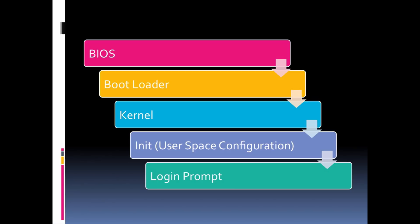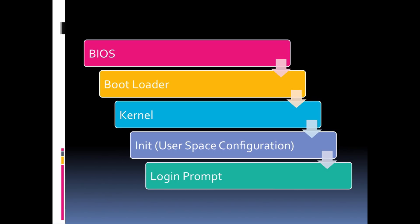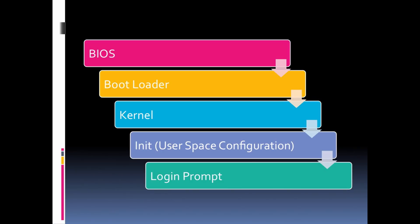Once the kernel gets itself configured and ready, it will launch a process called init, or a similar process, which handles all of the user-space configurations. This is really where the system gets ready for the user. Everything from the BIOS, the bootloader, and the kernel is to get the computer ready for the computer's own sake. The init process is really the first time where the computer starts to set itself up for the user, eventually ending with a login prompt after all services are configured.